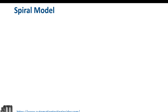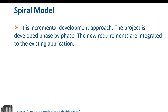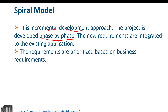Let's talk about some points about spiral model with the help of a diagram. It is an incremental development approach — similar to iterative development, we develop the product based on prioritized requirements, module by module. The project is developed phase by phase, and new requirements are integrated into the existing application. So module 1 has certain requirements, then module 2 adds more, and so on. Requirements are prioritized based on business requirements.